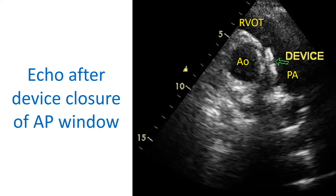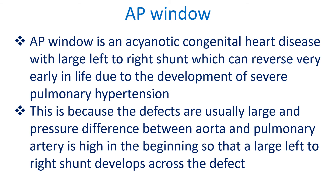Echocardiogram in parasternal short axis view showing a device closing an aortopulmonary window. The circular shadow to the right of the device is the cross-section of the aorta, while the semilunar shadow to the left is the right ventricular outflow tract and pulmonary artery.